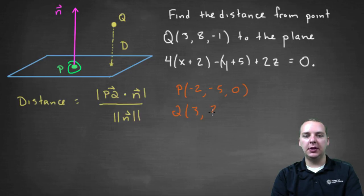which is given, is (3, 8, -1). And then the normal vector to the plane would be the vector (4, -1, 2).